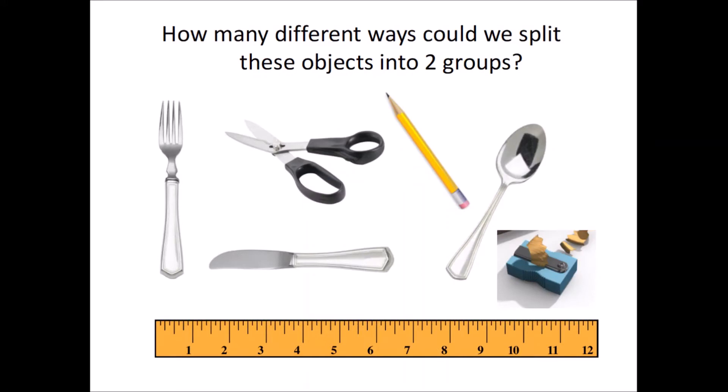So, for example, how many different ways could we split these objects into two groups? Well, one of them could be those objects that are made out of metal and those that are not, or those that are sharp and those that are not. I think I could make like 10 different groups. Pause the video and try your best, and then come back.